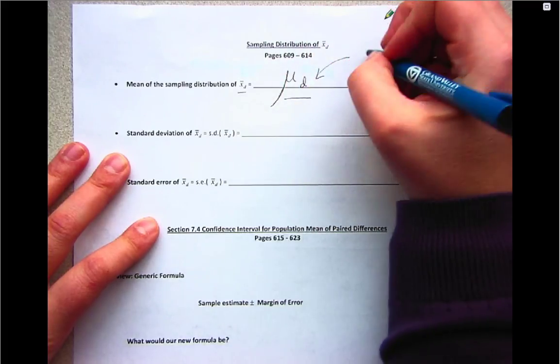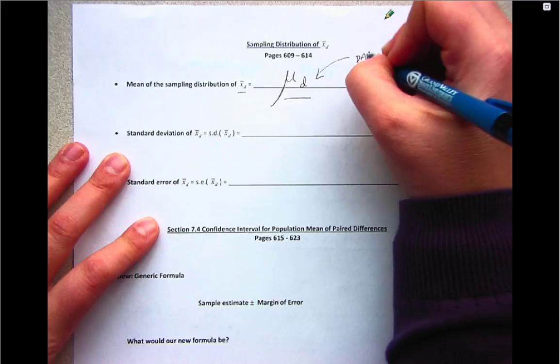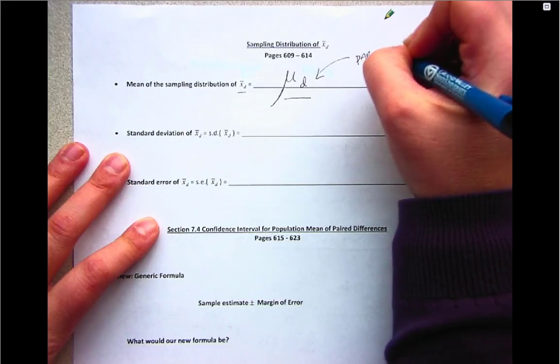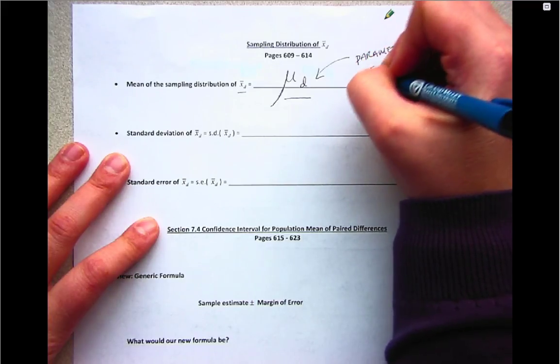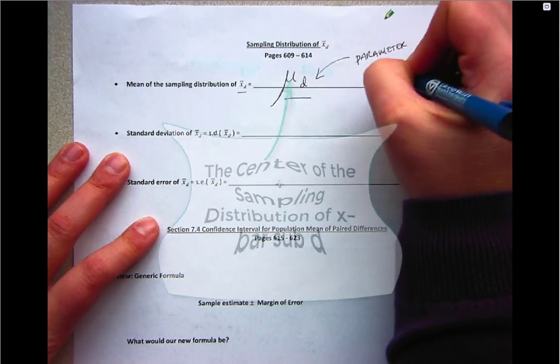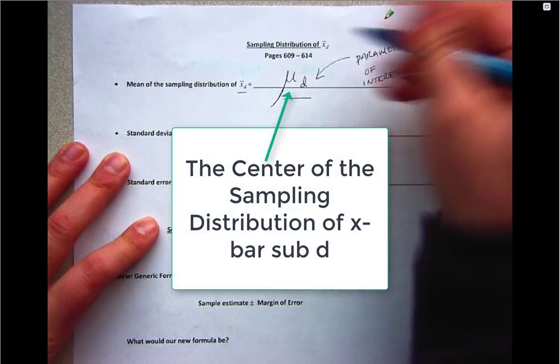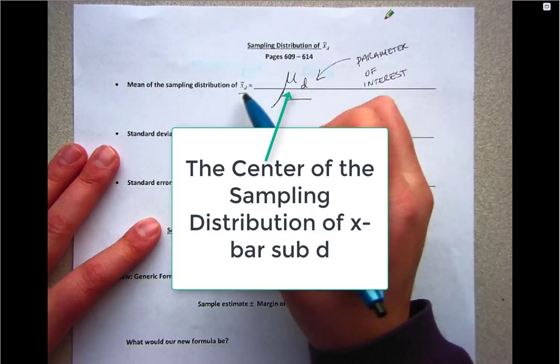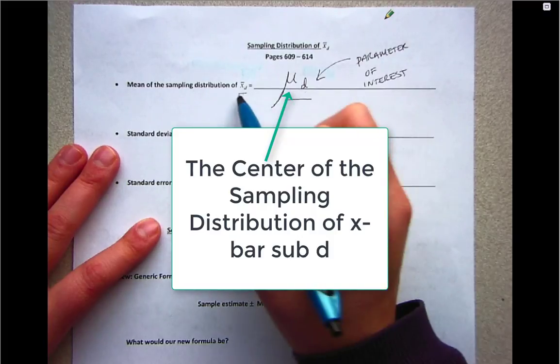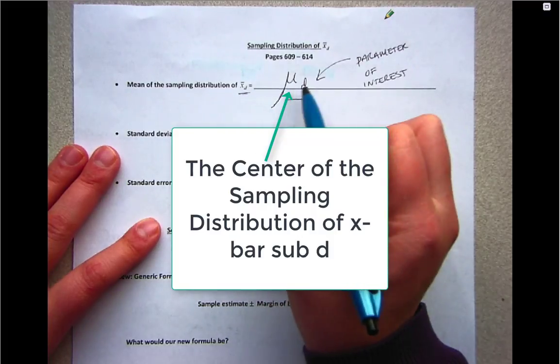This then is our new parameter of interest. So this is what we'll be trying to make an inference on for the rest of this chapter. We're trying to make an inference on mu sub d, and because the center of all of these X bar sub d is mu sub d, we know that X bar sub d is a good estimate of mu sub d.